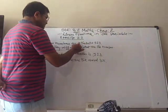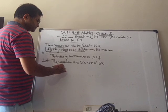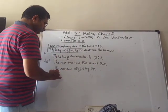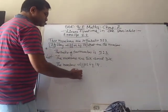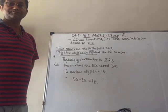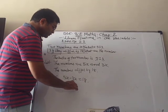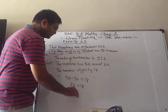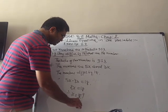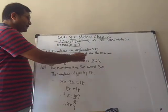According to the condition, they differ by 18, so we write: 5x minus 3x equals 18. This is a very simple sum. 5x minus 3x is 2x, so 2x equals 18, giving x equals 18/2, so x equals 9. But that is only the value of x — we still have to find both numbers.